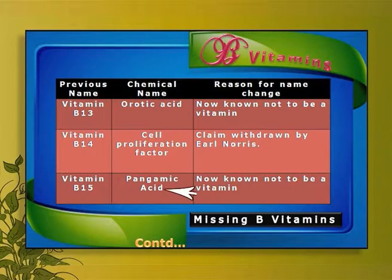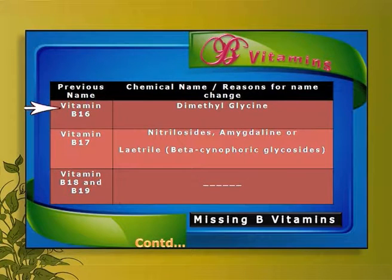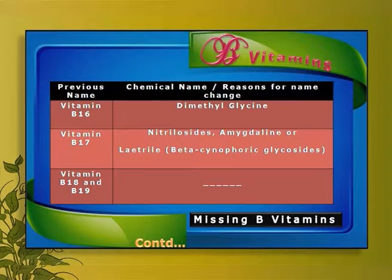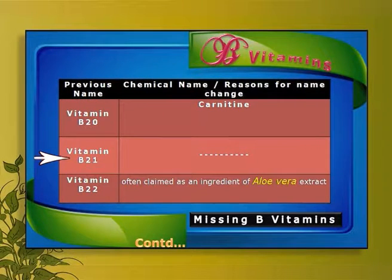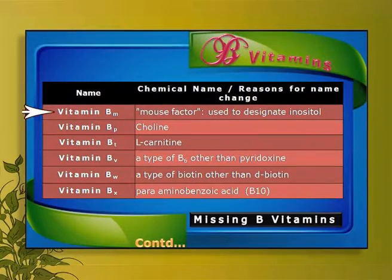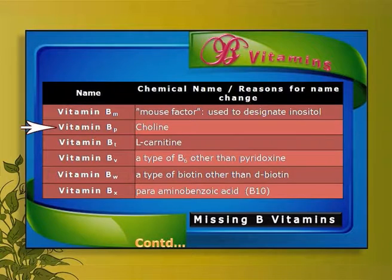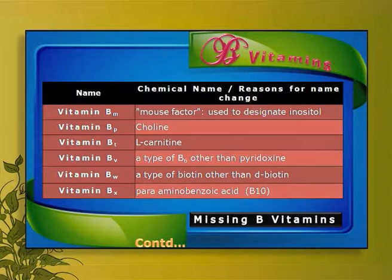B15 was pangamic acid — not a vitamin. B16 was dimethylglycine. B17 was amygdalin. There is minimal literature about B18, B19, B21. B20 was claimed to be carnitine and B22 was some compound present in aloe vera extract. The B vitamins that came with suffixes were Bm, which denoted inositol; Bp was choline; Bt was carnitine; Bw was a type of biotin other than the biologically active D-biotin; and Bx was once again para-aminobenzoic acid, which was previously claimed as vitamin B10.